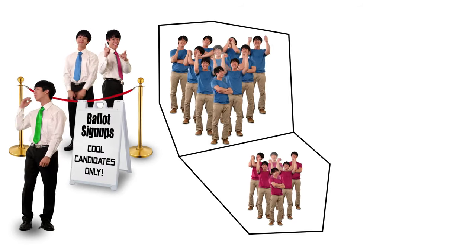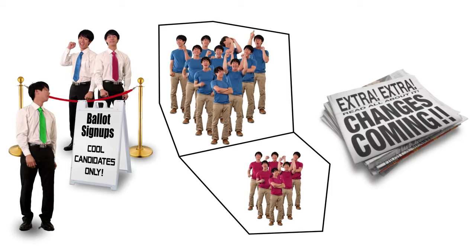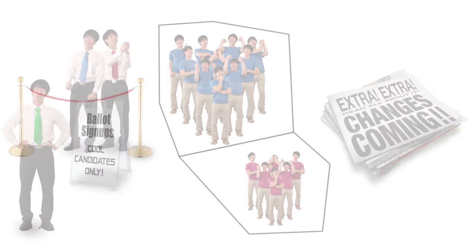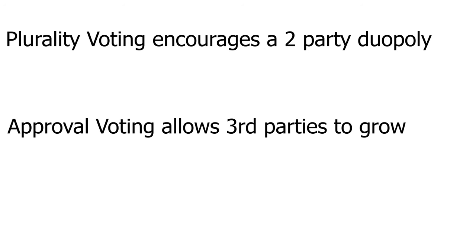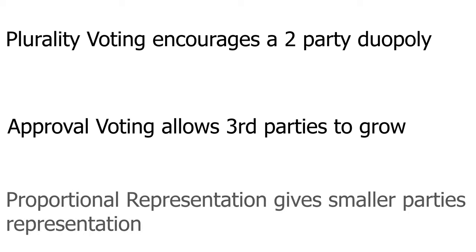Obviously, there are other influences on the number of parties besides Duverger's Law, such as ballot access, geographic concentrations, or unique political issues. But for the most part, we can conclude that plurality voting encourages a two-party duopoly, approval voting helps third parties by letting voters support their honest favorites, and proportional representation encourages an actual multi-party system.